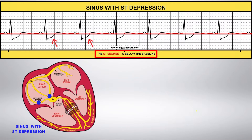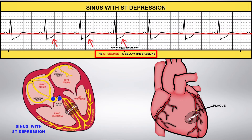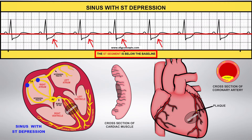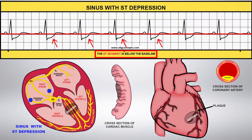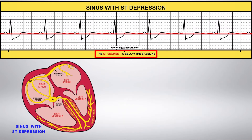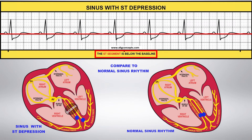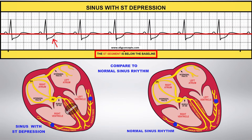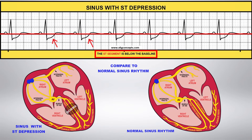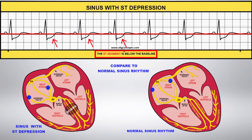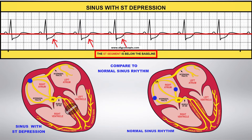The buildup of arterial plaque begins to deprive the heart of the proper amount of oxygen, causing damage to the heart muscle tissue. You can see the impulse can go through the ventricles causing depolarization, but has trouble repolarizing, illustrated by the impulse going around the ischemic area during repolarization. ST depression could also be the sign of a non-STEMI or reciprocal changes.